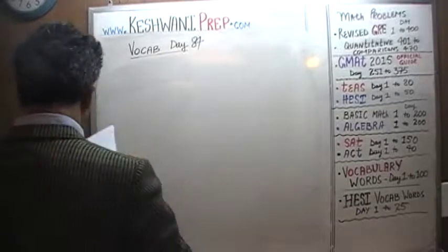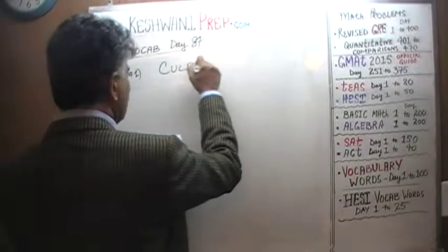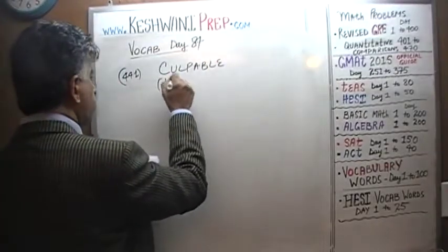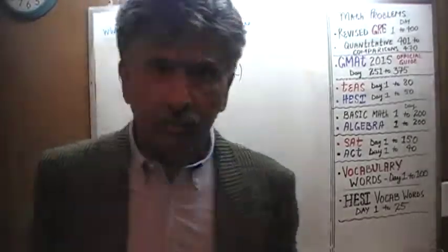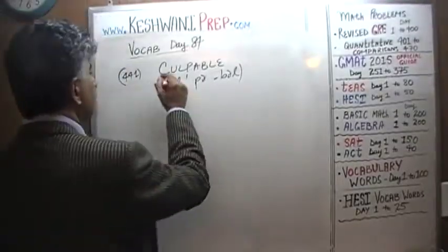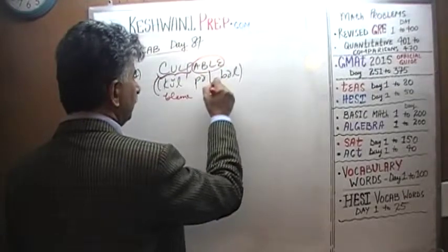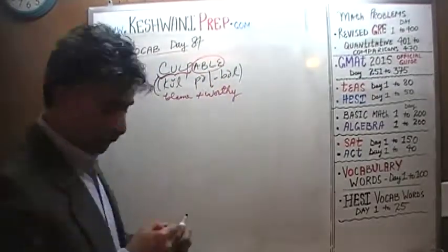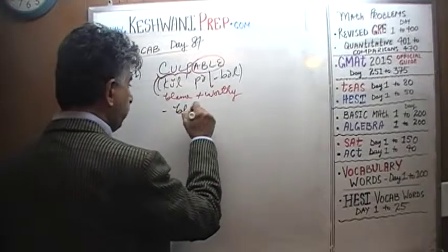The very first word we have here has to do with blaming someone. The word is culpable. What does it mean when you describe someone as being culpable? In order to understand that, we have to dissect the word. The first part, 'culp,' means blame. And the suffix '-able' means worthy. So culpable literally means someone who is worthy of blame. They are worthy of blame because they have done something wrong. Culpable means blameworthy.